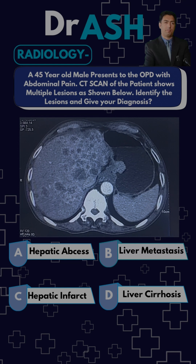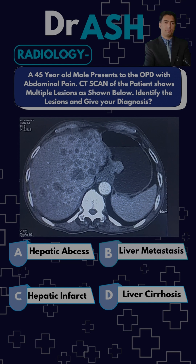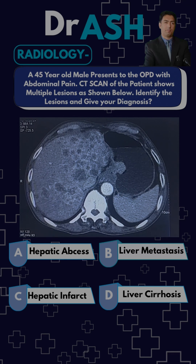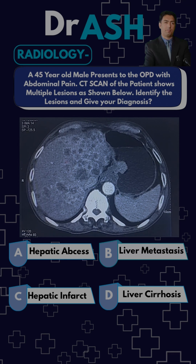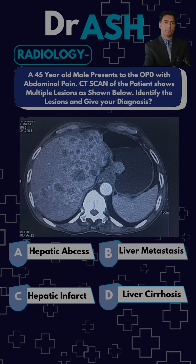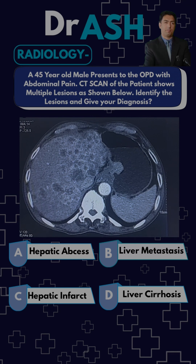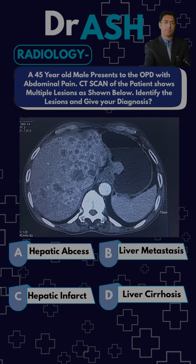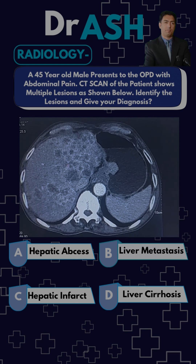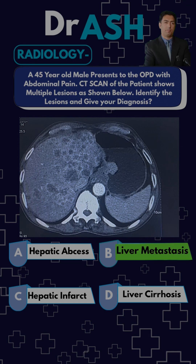This radiograph scan is so clear that you can see this is the liver. In the liver you note multiple lesions — numerous lesions in the substance of the liver. These are hepatic metastasis.